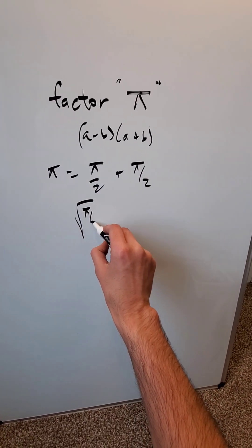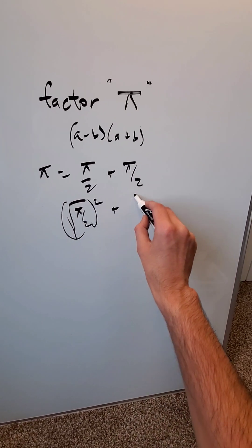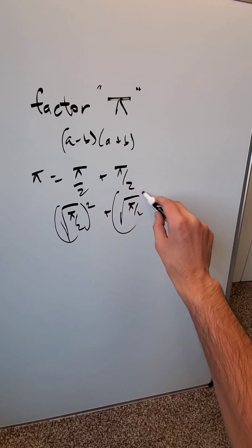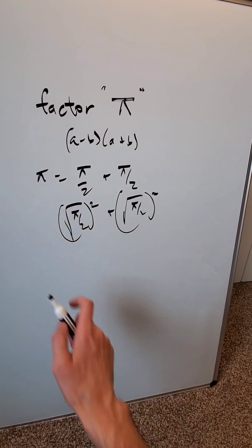Write the roots of these: (√(π/2))² plus (√(π/2))². This right here is equal to that, which is equal to that.